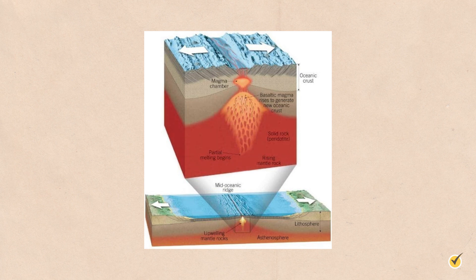Magma is generated in the Earth's uppermost mantle, which is primarily composed of solid rock. At places like divergent plate boundaries and hot spots, decompression melting is taking place — a reduction in pressure without a change in temperature. When magma is eventually forced upward to the surface and becomes lava, igneous rocks will have formed. At subduction zones, the addition of water can lower the melting temperature of rock, allowing magma chambers to form.